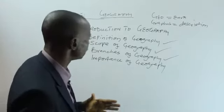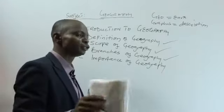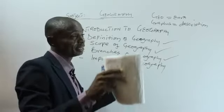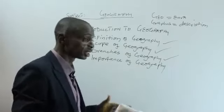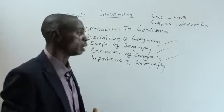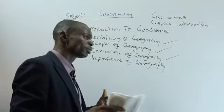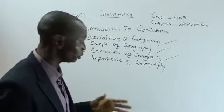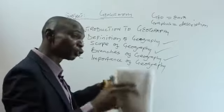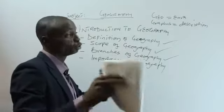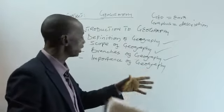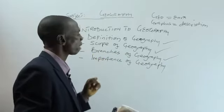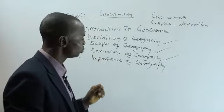Bringing that to Nigeria, for instance, we have the six geopolitical regions. When you take the south-south, northeast, northwest, or north-central as a region and you study the geography of that area, what we are dealing with is what we call regional geography.